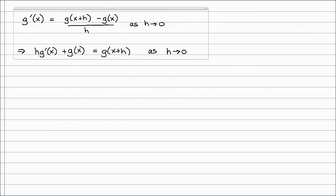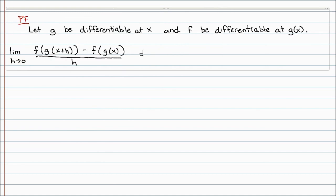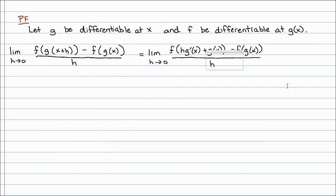So instead of g of x plus h, I'm going to replace that in our proof with h times g prime of x plus g of x. The problem is we don't know where to go from here. We've used the fact that g is differentiable at x, but we actually haven't used the fact that f is differentiable at g, and that's going to be useful here.